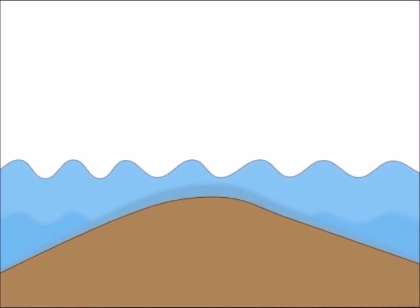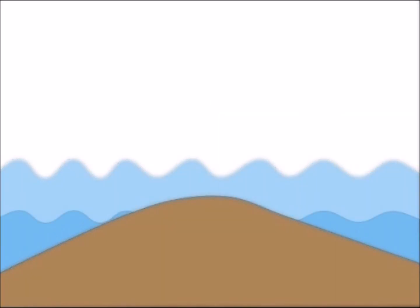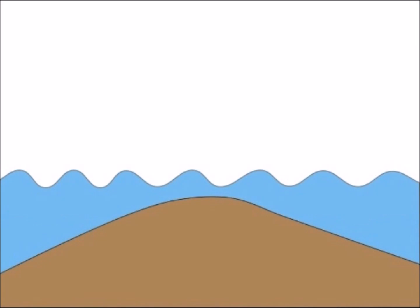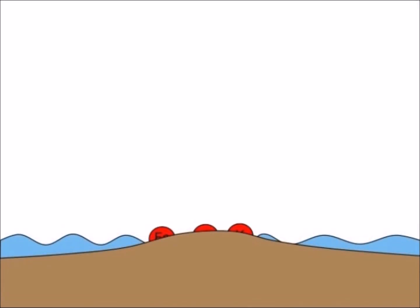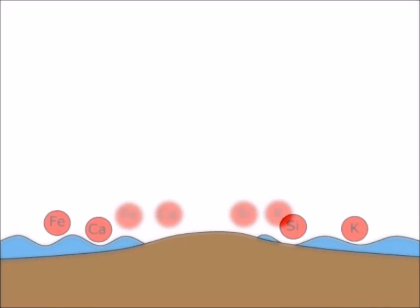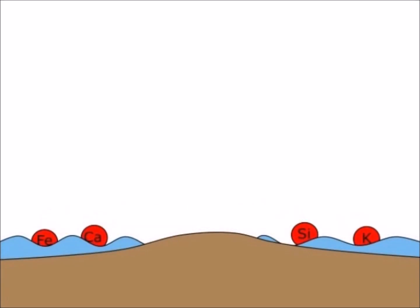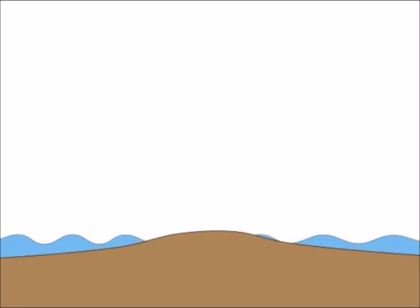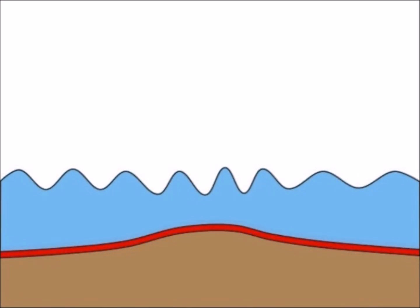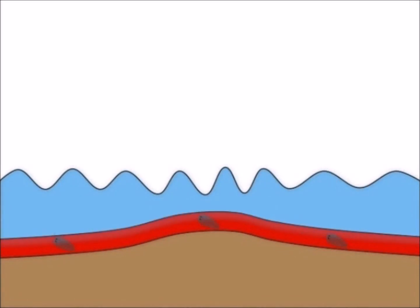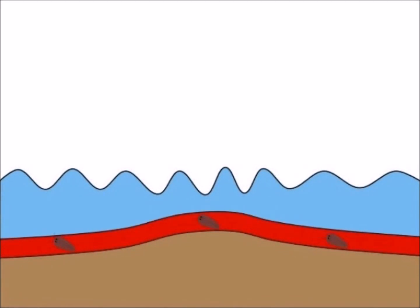During the early Cambrian, shallow seas repeatedly advanced and retreated across the North American continent, eroding away surface rock to uncover fresh basement rock exposed to the surface for the first time. These crustal rocks then reacted with air and water, which would have released ions such as calcium, iron, potassium, and silica into the oceans. Today, these rocks would have been submerged and covered in sediment deposits from the Cambrian seas, completing the formation of the Great Unconformity.